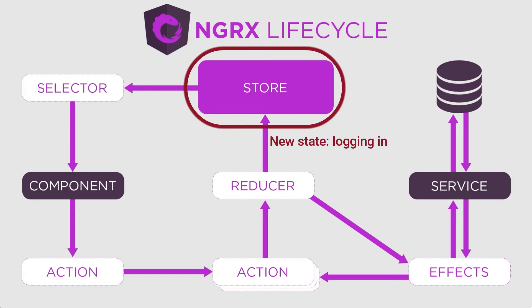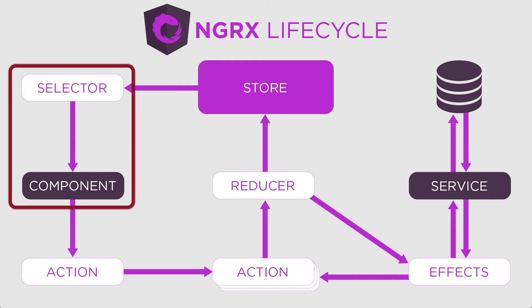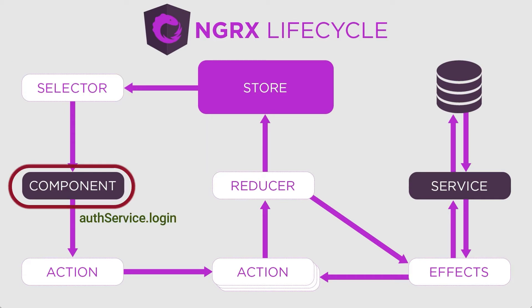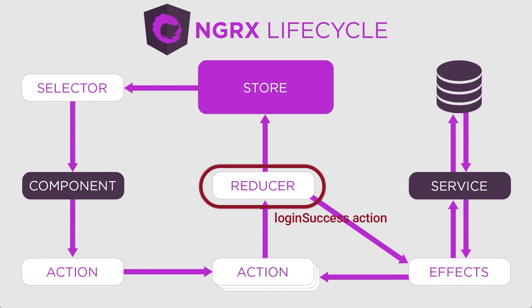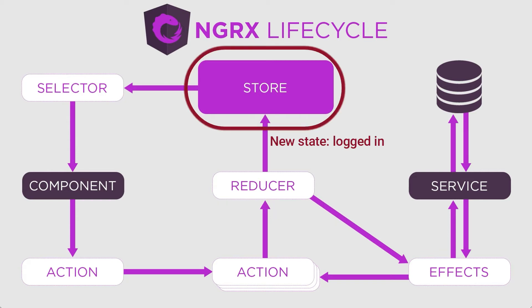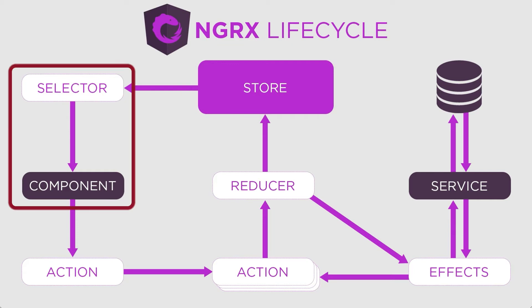The reducer changes the login state based on that action, and as the login page is observing the login state, the login page then calls the auth service login. After the auth service login responds with success, the login page calls the login success action, which is captured by the reducer. The reducer handles that action, changes the login state, and the login page sees the login was successful and takes the user to the home page.